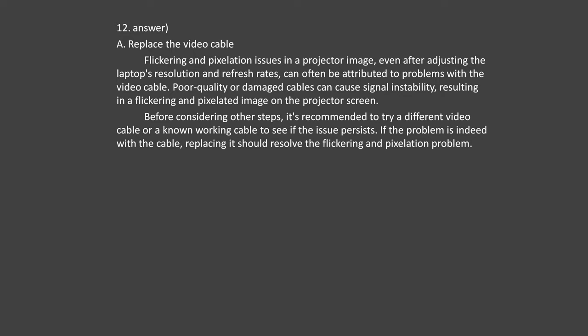Question number 19. A system administrator is building a server for a data center in another country. The server will manage a print queue and provide a local storage partition for temporary file transfers. Which of the following power supply specifications will be the most important for this server? Option A: Modular cabling. Option B: Voltage input options. Option C: Number of PCI-E connectors. Option D: Fan noise rating. Answer number 19: The most important power supply specification would be Option B — voltage input options.